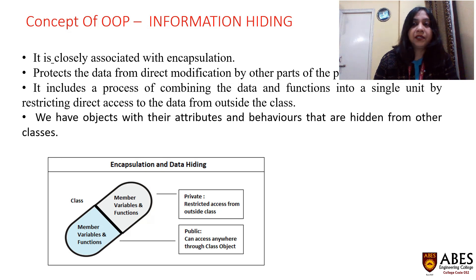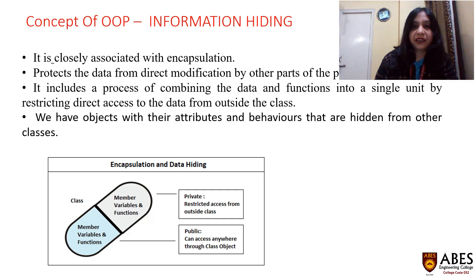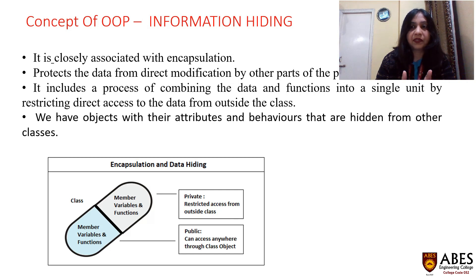The next feature is information hiding, which is closely associated with encapsulation and is implemented with the help of encapsulation. Information hiding protects the data from direct modification by other parts of the program. It includes the process of combining data and functions into a single unit by restricting direct access to the data from outside. Objects have attributes and behavior that are hidden from other classes. Encapsulation and data hiding are two parallel concepts — data hiding is implemented through encapsulation.